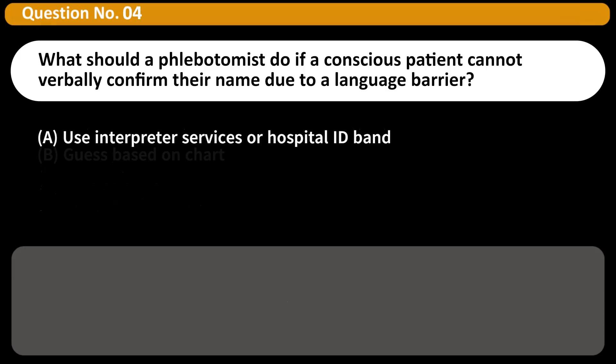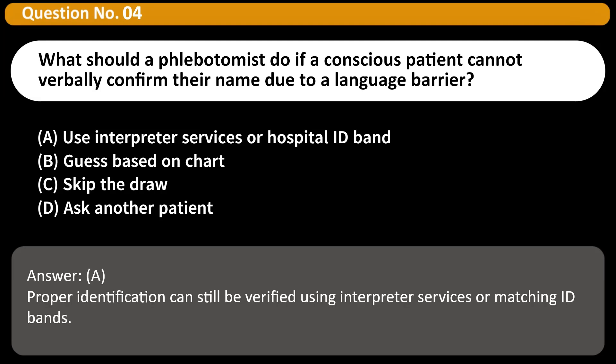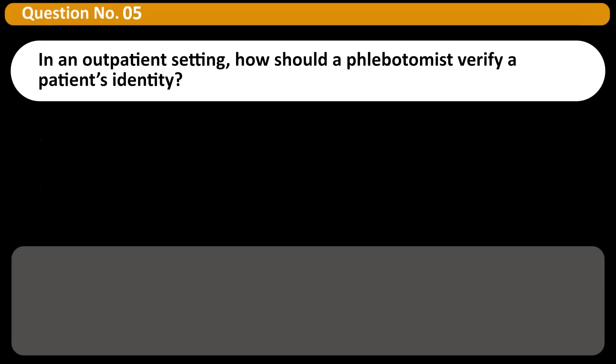What should a phlebotomist do if a conscious patient cannot verbally confirm their name due to a language barrier? A. Use interpreter services or hospital ID band. B. Guess based on chart. C. Skip the draw. D. Ask another patient. Answer: A. Proper identification can still be verified using interpreter services or matching ID bands.